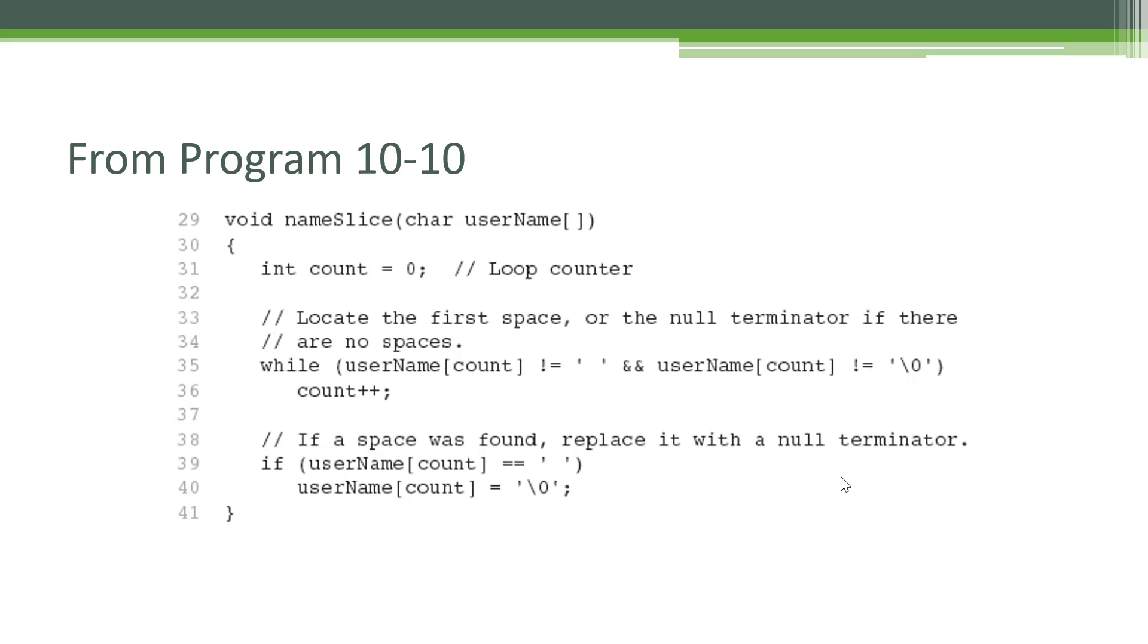Here's another example function of manipulating a C string. Again, we're passing in the character array. The name slice is meant to slice off the very first name or the first alphanumeric data in that char array. It searches for the first space. If a space is not found, then it will stop at the first terminator. It finds that first space and replaces it with the terminator and therefore is slicing off the rest of it and leaving only the first set of letters and characters that are found before the very first space.